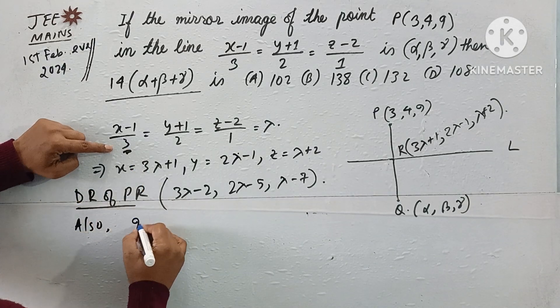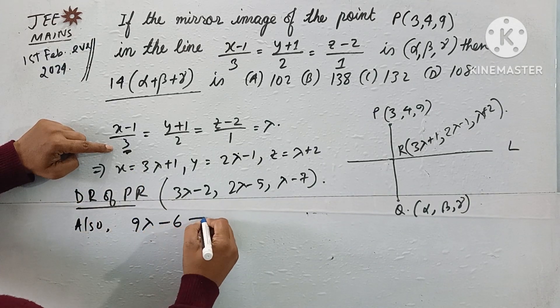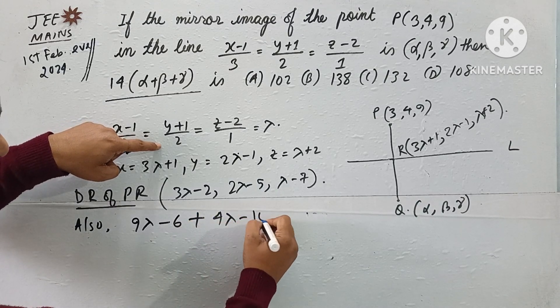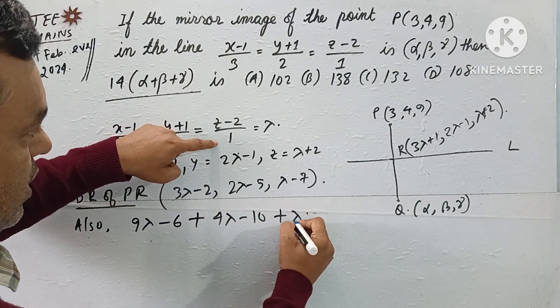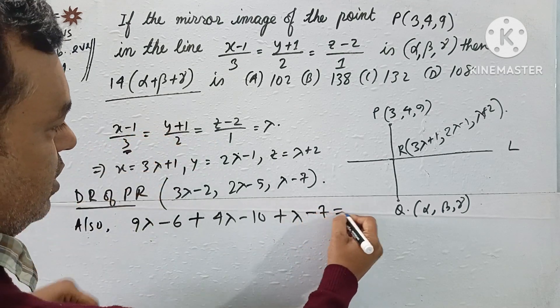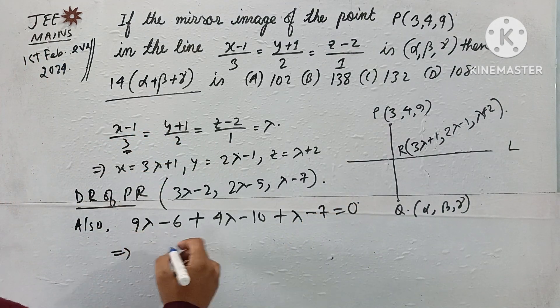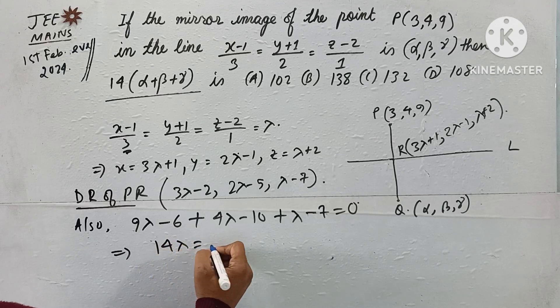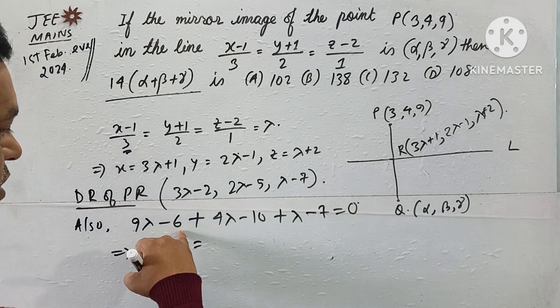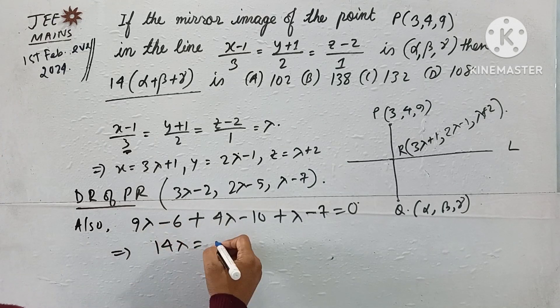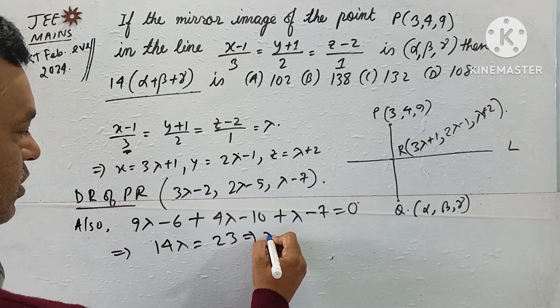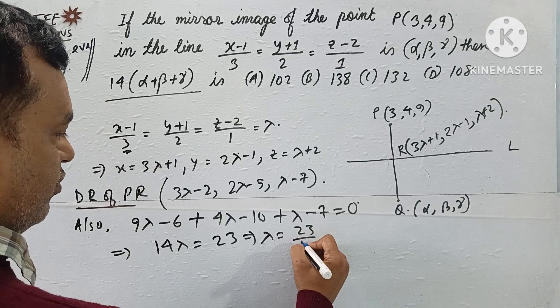Taking the product: 9λ-6 + 4λ-10 + λ-7 = 0. This gives us 14λ = 23, so λ = 23/14.